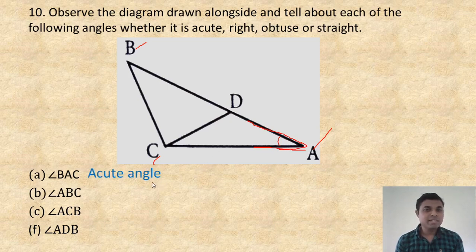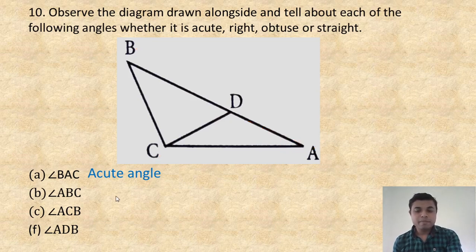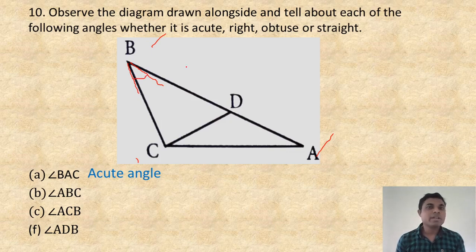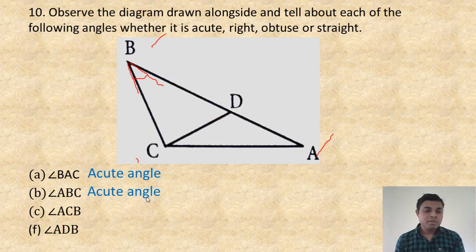Angle ABC: here it is A, here it is B, and here it is C — this angle is also less than 90 degrees. So it is also an acute angle. Write the answer: acute angle.